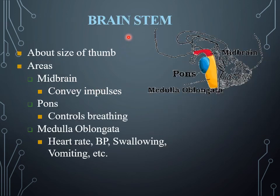The brain stem region is about the size of a thumb. Its areas include the midbrain, which conveys impulses; the pons, which controls the breathing rate; and the medulla oblongata, whose function is to control and regulate heart rate, heart rhythm, blood pressure, swallowing, and vomiting — which are parts of the GIT.